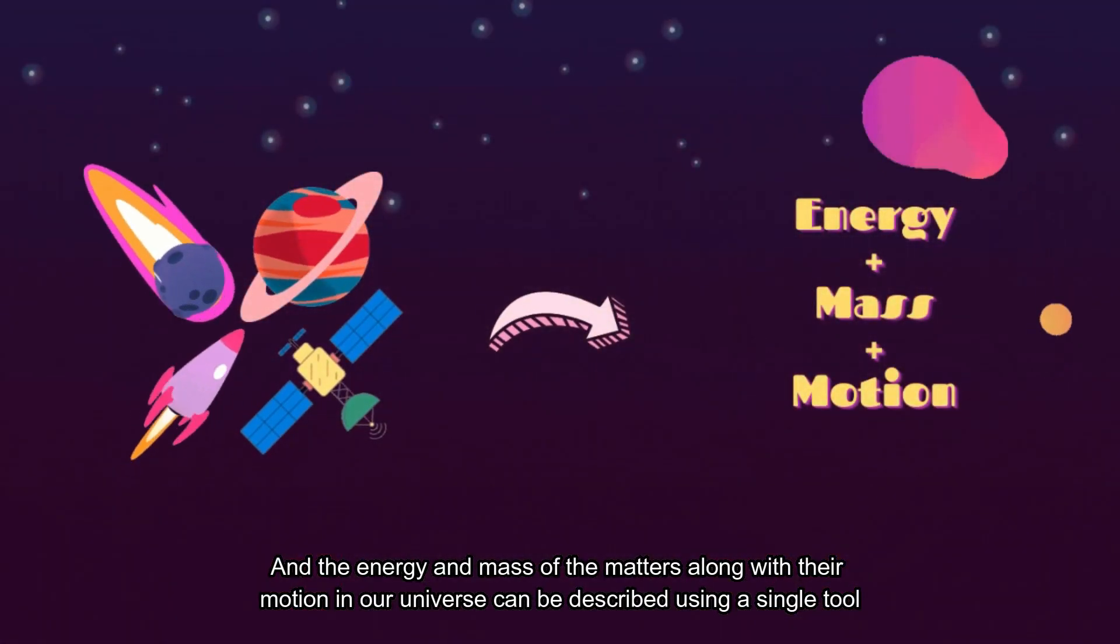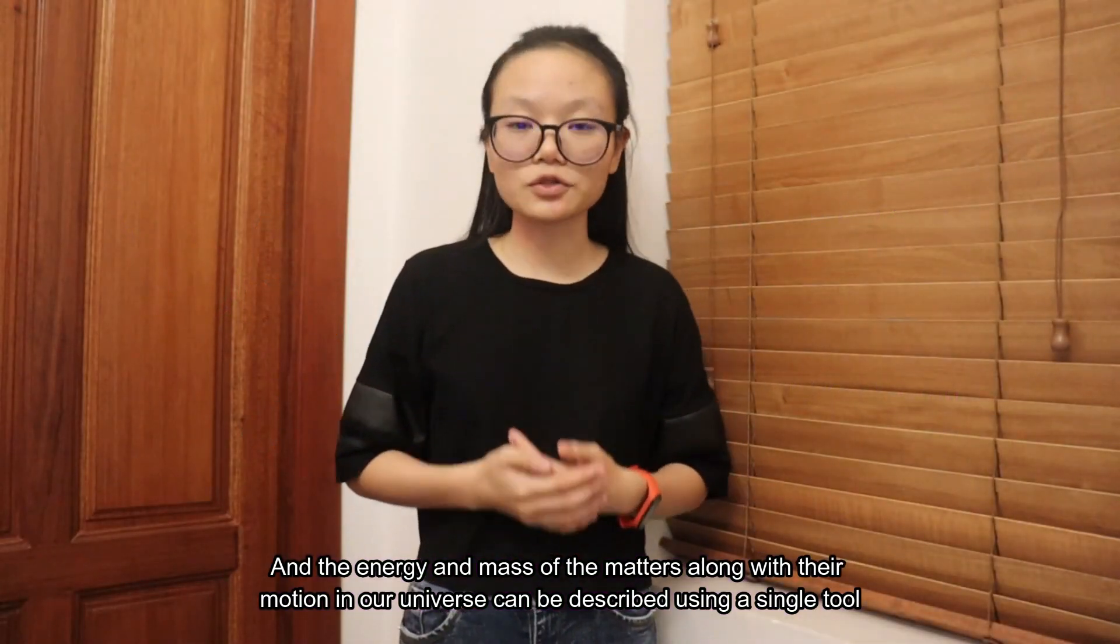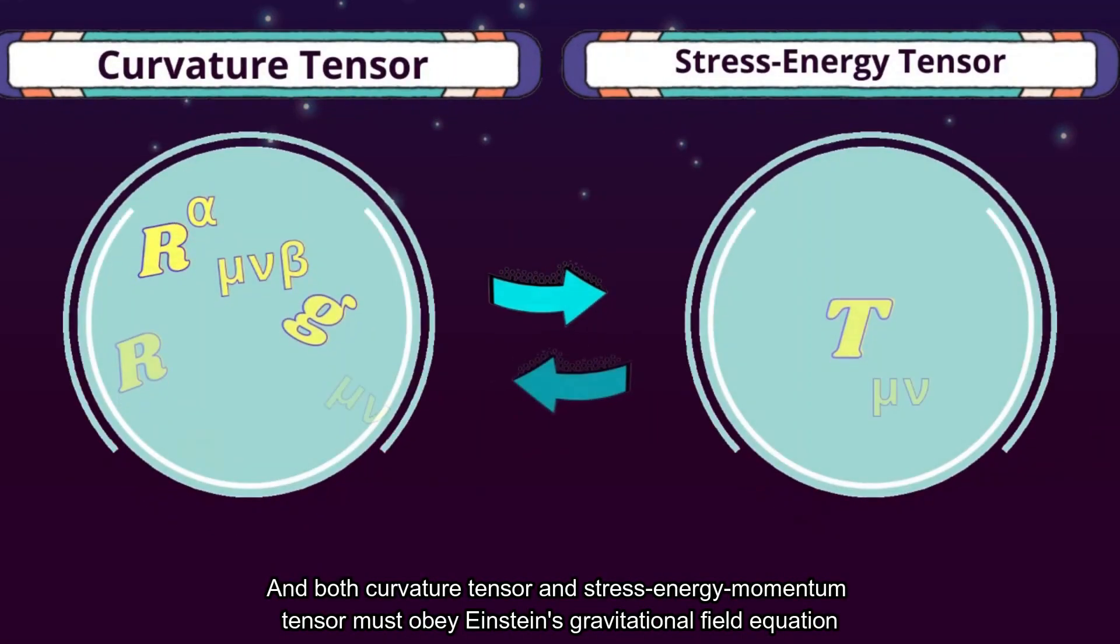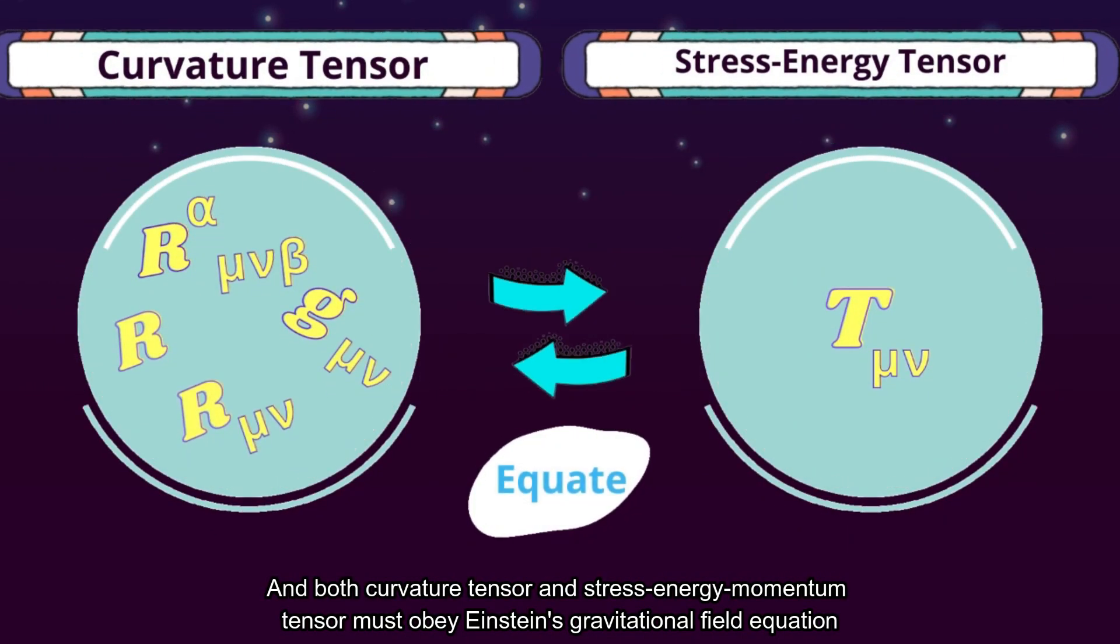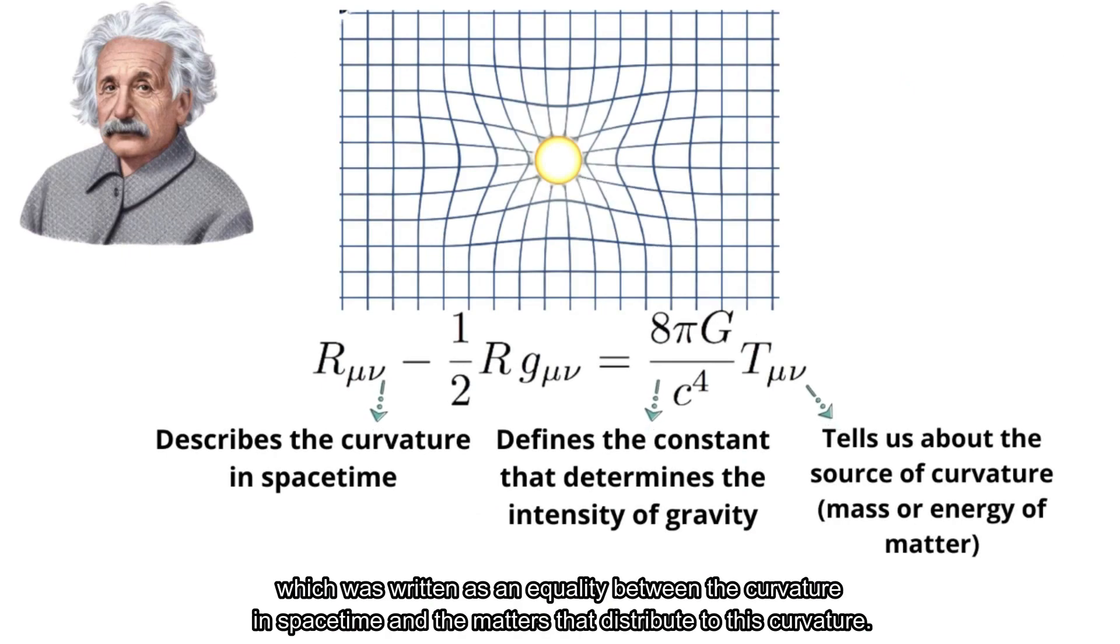The energy, mass, and motion of matter in our universe can be described using a single tool known as the stress-energy-momentum tensor. Both the curvature tensor and stress-energy-momentum tensor must obey Einstein's gravitational field equations, which establishes an equality between the curvature in space-time and the matter that creates this curvature.